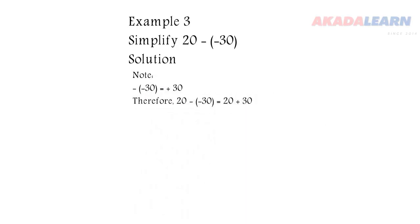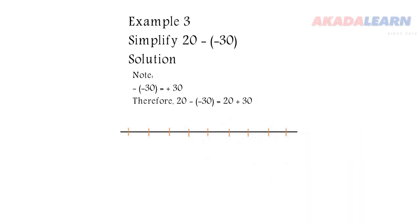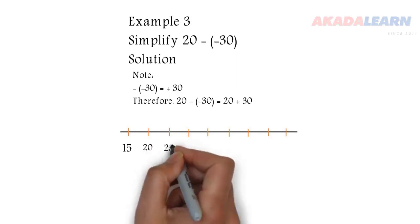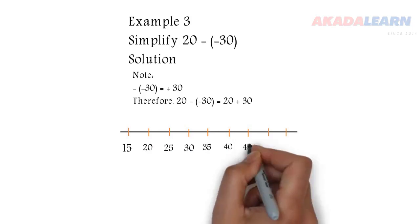So 20 minus minus 30 is the same thing as 20 plus 30. We draw our number line. This time around we are using the space of 5, 5, 5, 5, 5.